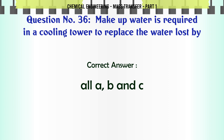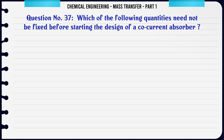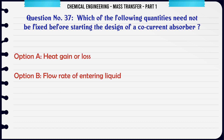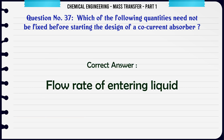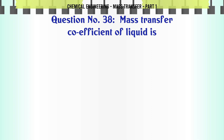Which of the following quantities need not be fixed before starting the design of a co-current absorber? A. Heat gain or loss. B. Flow rate of entering liquid. C. Flow rate of gas. D. None of these. The correct answer is flow rate of entering liquid.